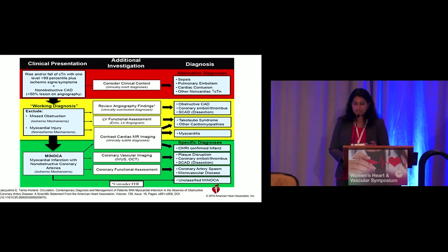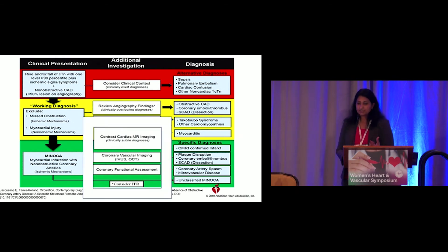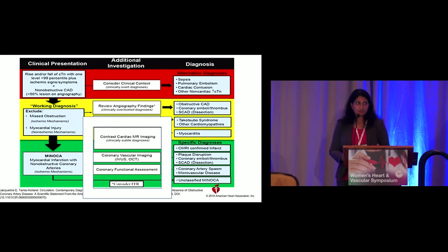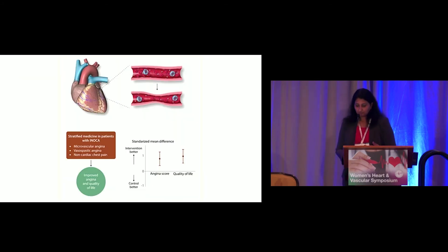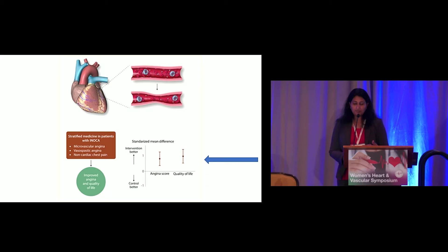Once the diagnosis is made, we move to the green phase. Recommended cardiac imaging includes contrast cardiac MRI, coronary vascular imaging, intravascular ultrasound, OCT, and coronary functional testing — including consideration of fractional flow reserve in these vessels. Importantly, we do want to intervene on these patients because there is improved quality of life and better angina scores following intervention.